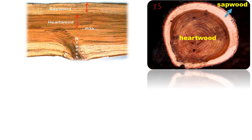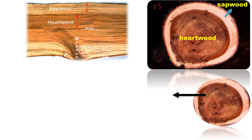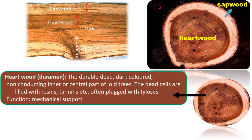Let us explain the characteristics of heartwood and sapwood with this picture. Heartwood is the durable, dead, dark-colored, non-conducting central part of all trees. The dead cells are filled with resins and tannins — that is the reason for this dark color — often plugged with thyloses.